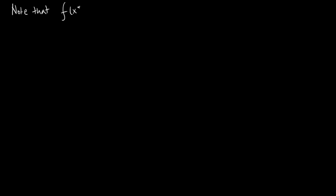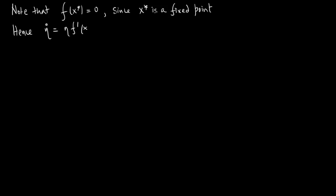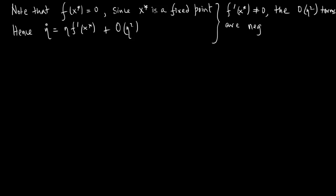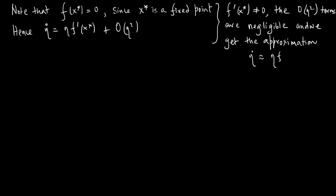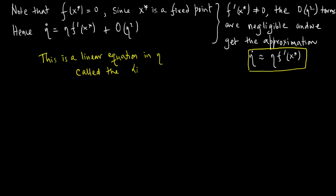Note that f(x*) = 0 since x* is a fixed point. Hence η_dot = η·f′(x*) + O(η²). If f′(x*) ≠ 0, the order η² terms are negligible and we get the approximation η_dot = η·f′(x*). This is a linear equation in η, called the linearization about x*.